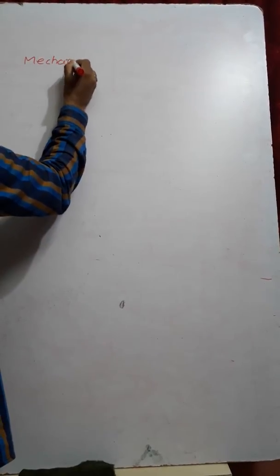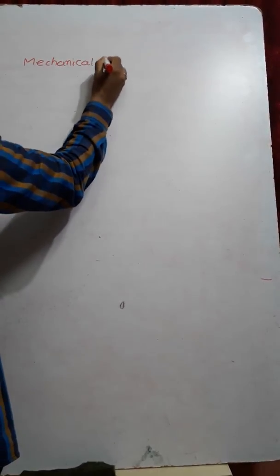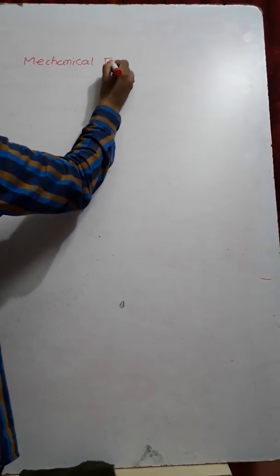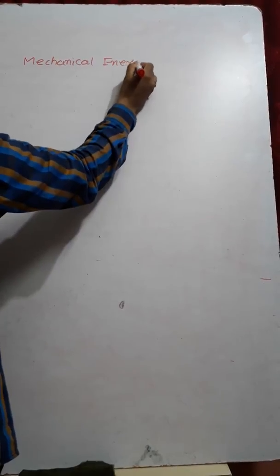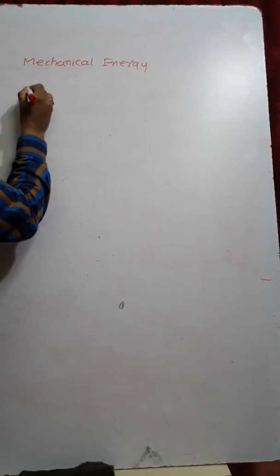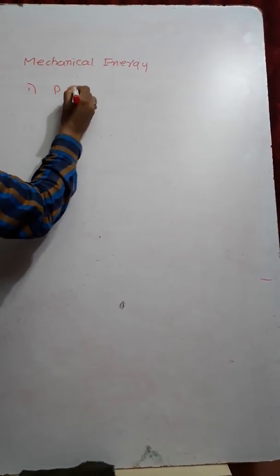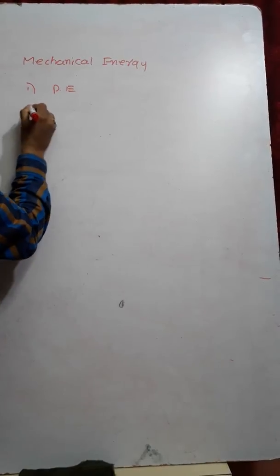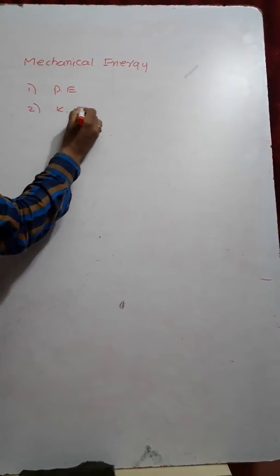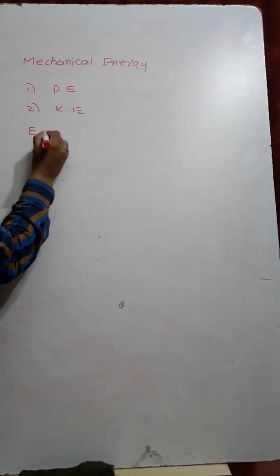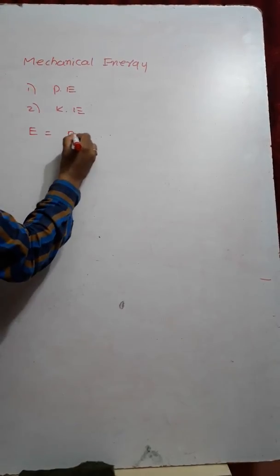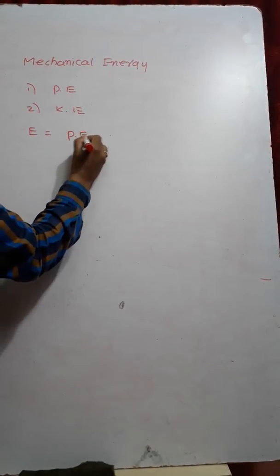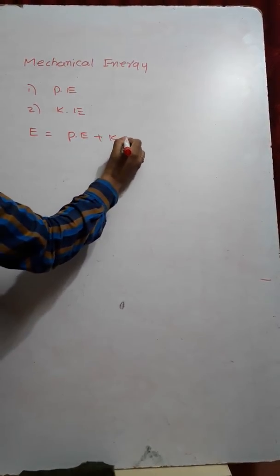Mechanical energy is in two forms: potential energy and kinetic energy. Total mechanical energy is the sum of potential energy and kinetic energy.